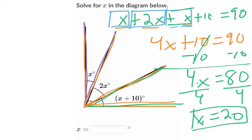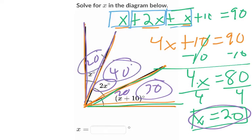You can always check your work to see if that actually adds up to 90. So for example here, if x is 20, well, this angle is 20 degrees, this is 2x, so that will be 40 degrees, and this is 20 plus 10, which is 30 degrees. So ask yourself, do these actually add up to 90 degrees? As a matter of fact, they do. 20 plus 40 is 60, plus 30 is 90.